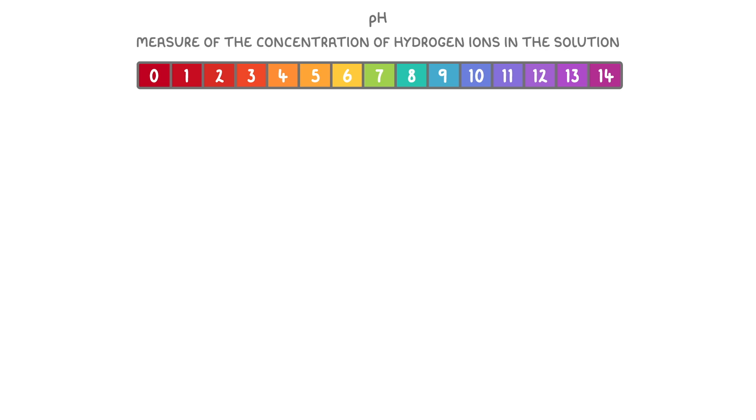The last thing we need to cover is pH, which is just a measure of the concentration of hydrogen ions in the solution. The weird thing though is that as the concentration of hydrogen ions gets higher, the pH gets lower.